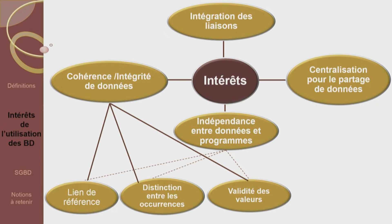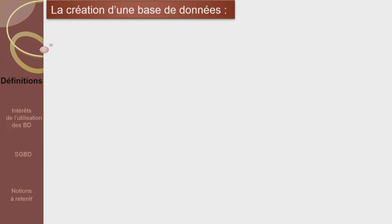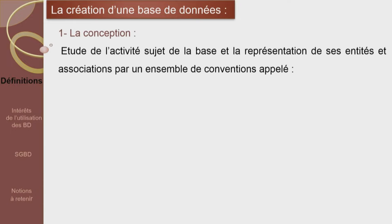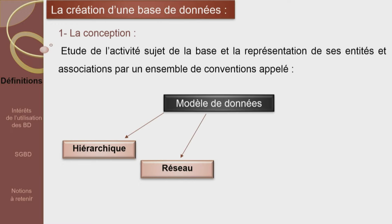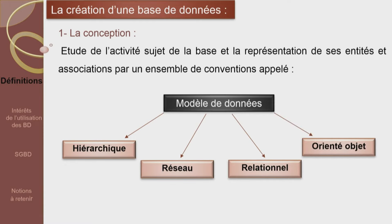Cette centralisation des données va séparer les données des traitements et ajouter les conditions nécessaires pour assurer la validité des valeurs, la distinction entre les occurrences et la définition des liens entre les différents sujets de la base, ce qui donne un maximum de cohérence et d'intégrité. La création d'une base de données se fait en deux étapes. La première étape est l'étape de la conception : l'étude de l'activité sujet de la base et la représentation de ses entités et associations par un ensemble de conventions appelées modèles de données. Quatre modèles ont été utilisés : le modèle hiérarchique, le modèle réseau, le modèle relationnel et le modèle orienté objet. Nous allons utiliser le modèle relationnel pour la suite des cours.